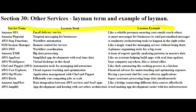Imagine you're planning a party and there are several tasks to complete: sending invitations, ordering food, and setting up decorations. AWS Step Functions is like your party planner. Instead of managing each task separately, the party planner ensures that everything happens smoothly. You define the order of tasks, the workflow, and specify conditions — if this, then that.